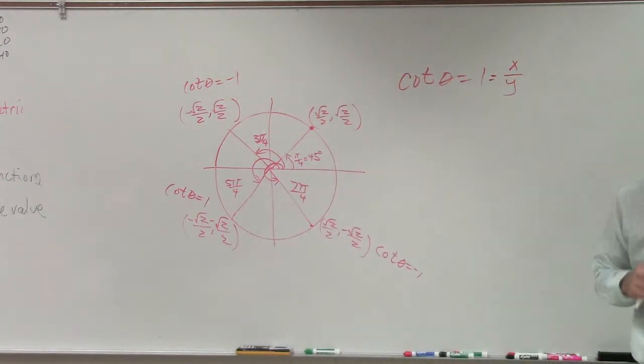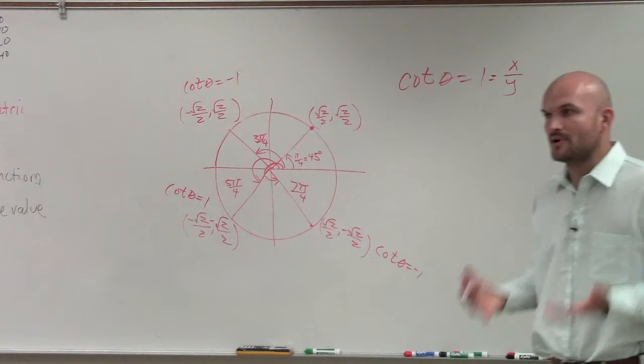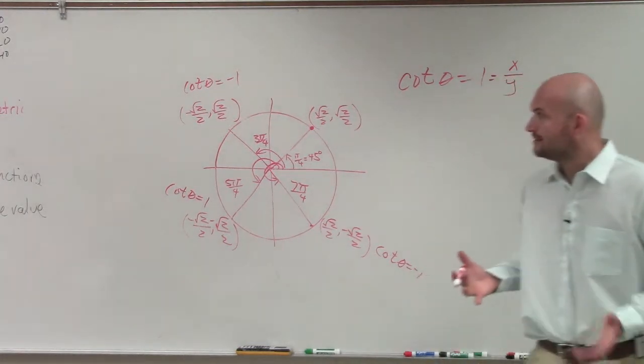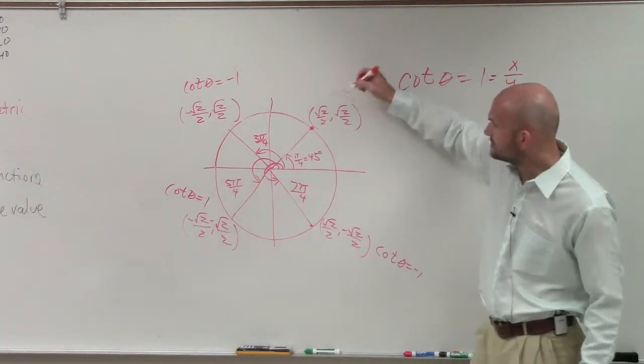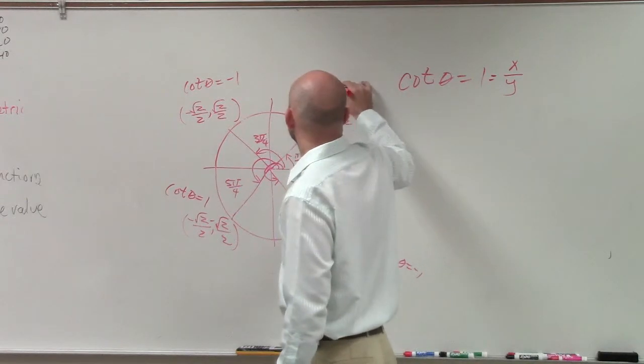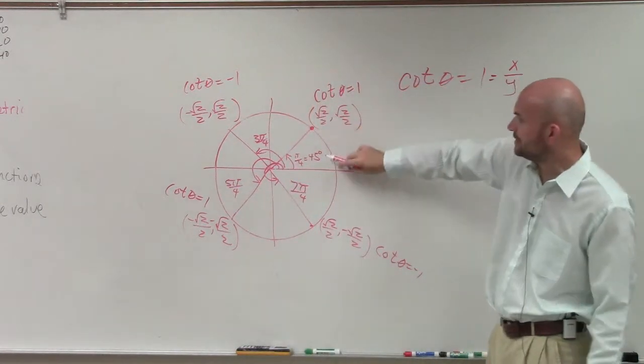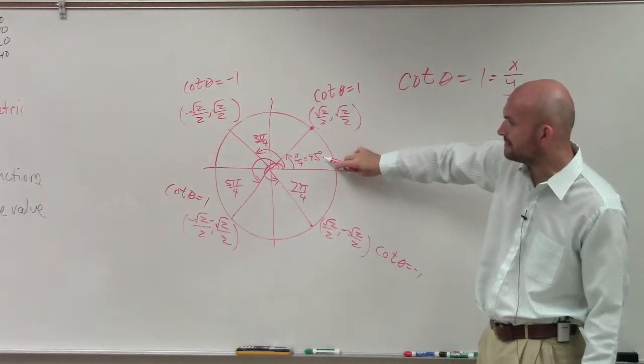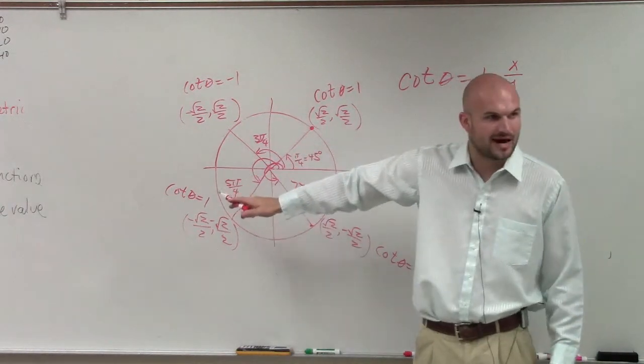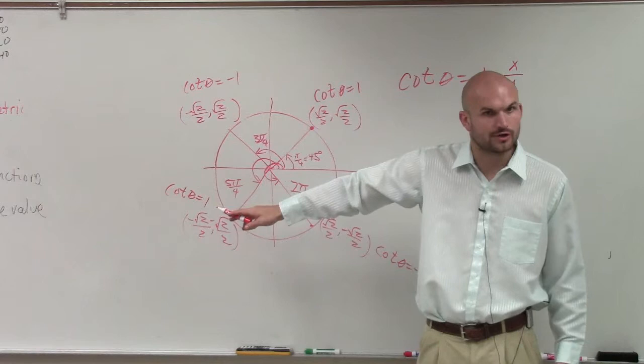It's really important to understand that. But the main important thing about this problem is you have two points where cotangent is equal to 1. You have cotangent equal to 1 here at π over 4 and 45 degrees, or at 5π over 4, or 225 degrees.